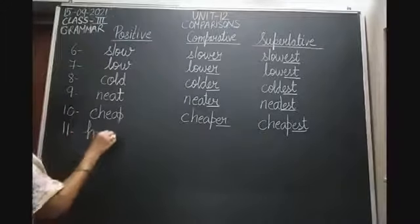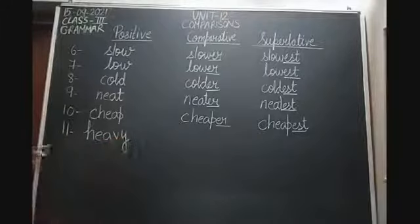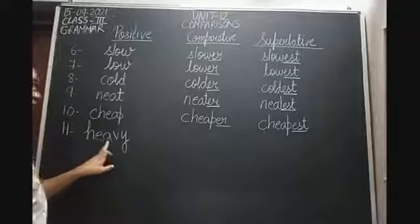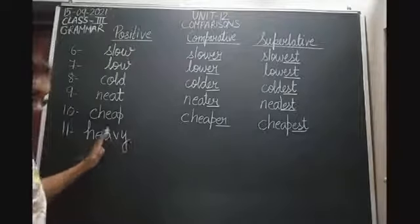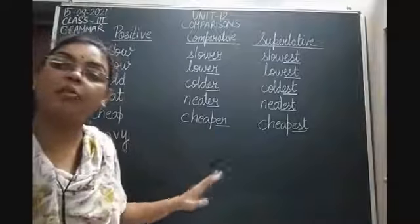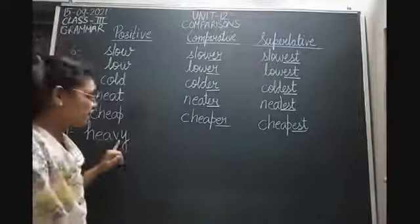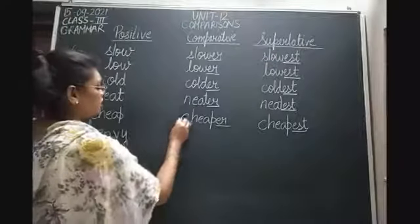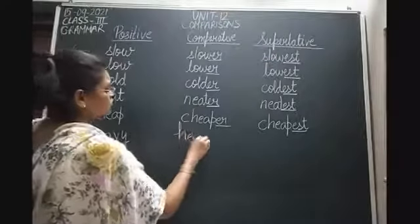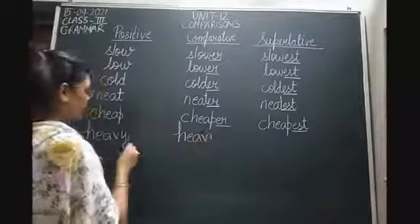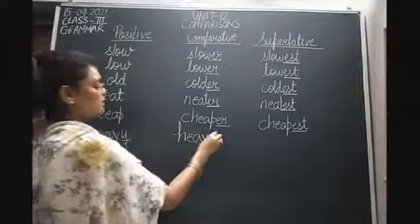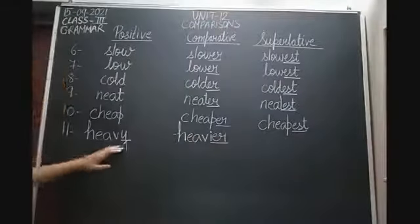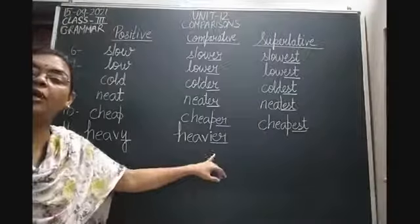The eleventh word is heavy. Notice carefully — heavy has Y at the end: H, E, A, V, Y. For heavy, we will remove the Y and add IER to form the comparative degree. So heavy's comparative degree becomes heavier. Y is at the end, so we remove Y and replace it with IER to form the comparative degree.